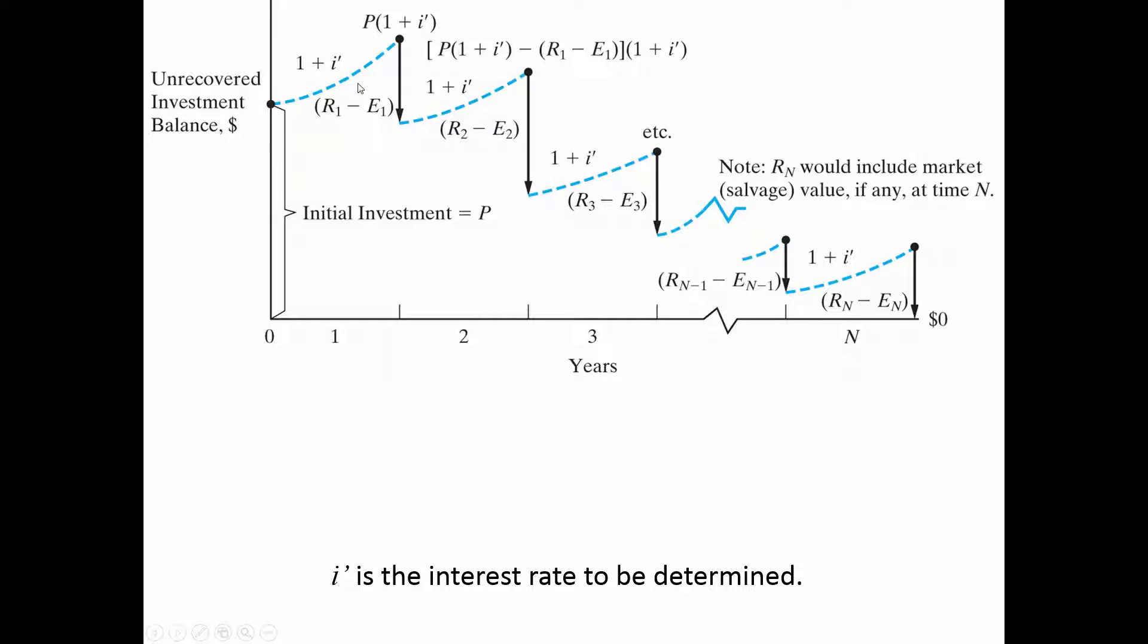Over time, as interest accumulates, their unrecovered balance goes up. So here at the end of the first period, at the end of the first year, they're actually owed more than they originally gave out because of the effect of interest.